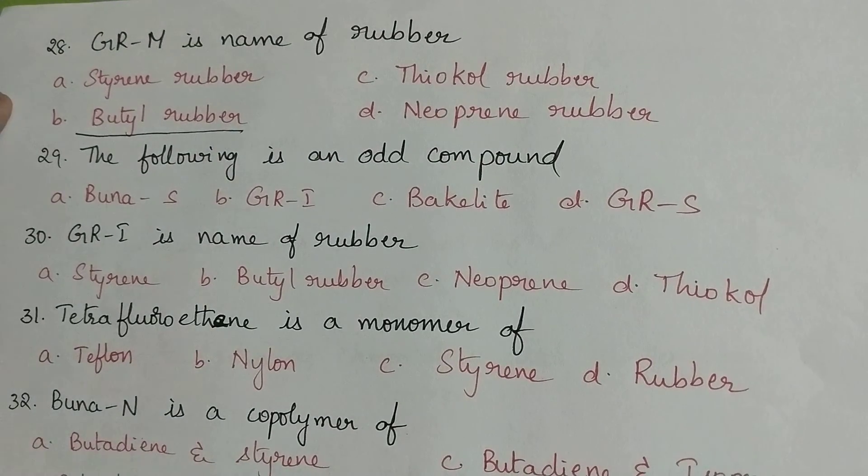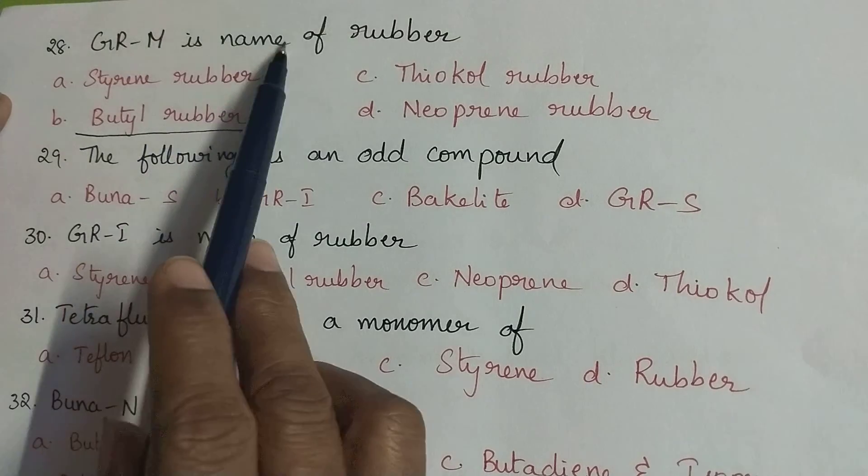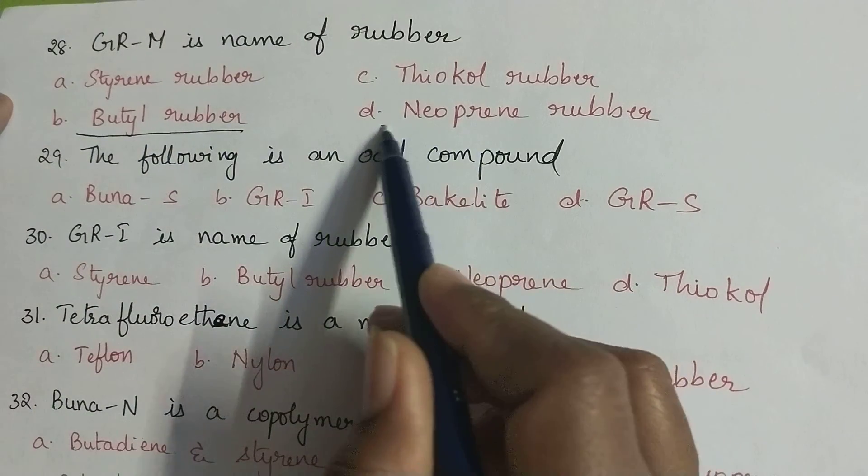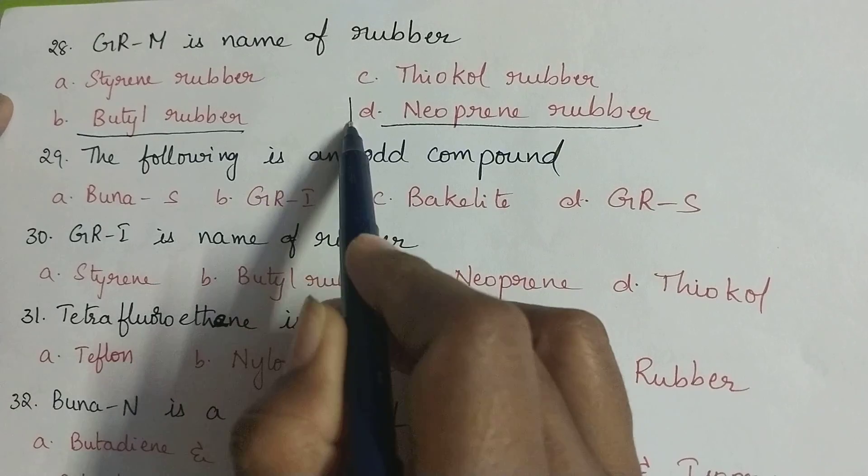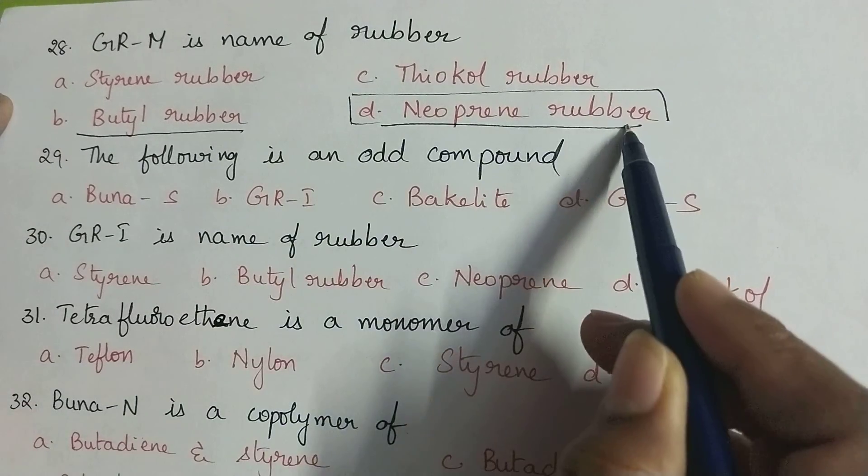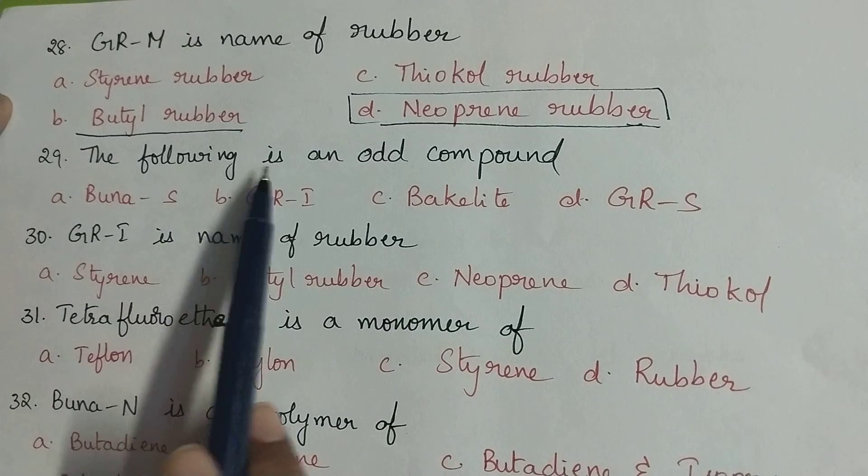GR-M is name of rubber neoprene rubber. GR-M is the name of neoprene rubber.